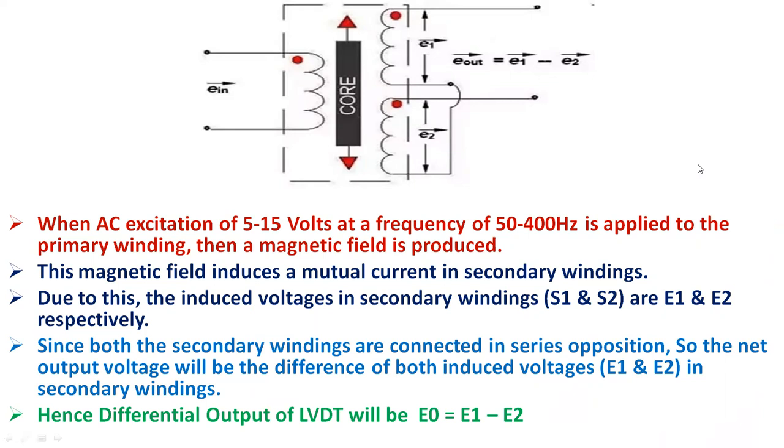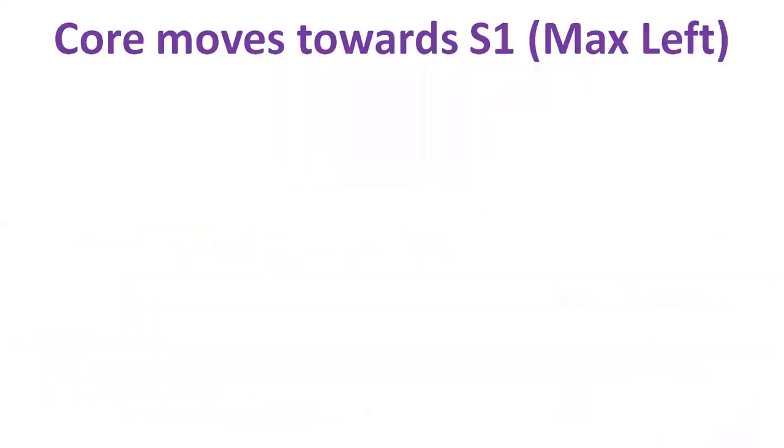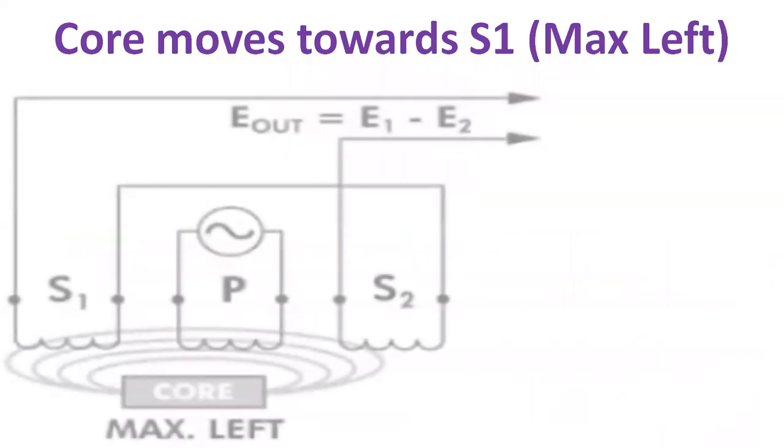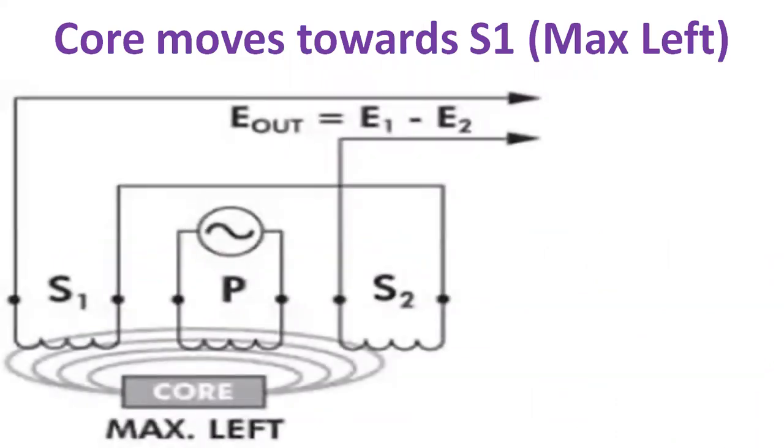Now, according to the position of the core, there are three cases that arise. Let's discuss these cases one by one. When the core moves towards S1, that is to the maximum left, then the flux linkage with S1 will be more compared to S2. This means EMF induced in S1 will be more than the induced EMF in S2. Hence, E1 is greater than E2, and net differential output voltage E0 is equal to E1 minus E2, which will be positive. This means the output voltage E0 will be in phase with the primary voltage.